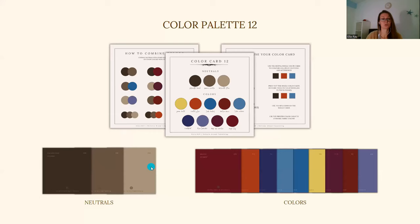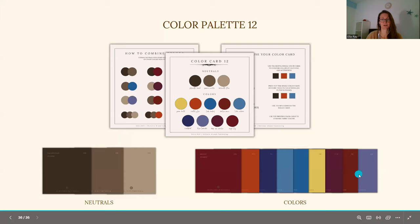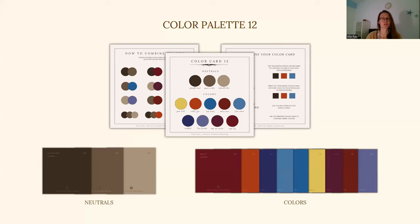Your single color cards will contain the color name and the hex code with an internal color code that will be important when you are shopping for clothing, especially online. You will get your three neutrals on a single color card as well as your nine colors. If you want me to find your true color type based on my method, check out the description. You can book a custom premium color palette of 3, 12, or 48 colors, including single color cards for easy online and in-store shopping.